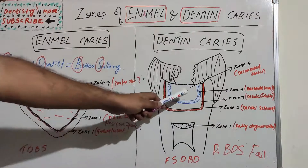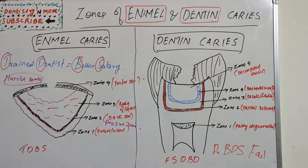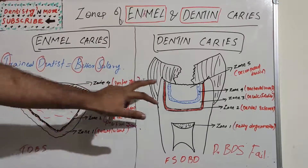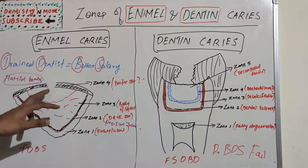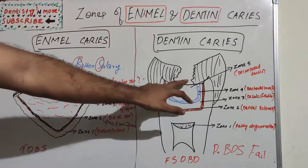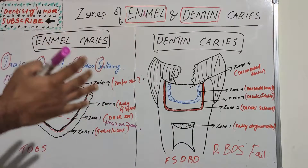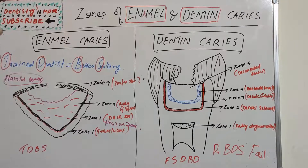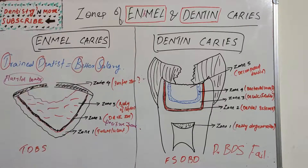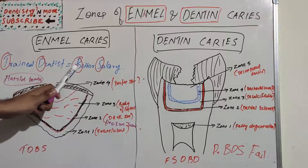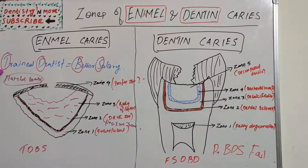In tooth preparation, zones 4 and 5 must be removed; zone 2 is self-repairable. The enamel zones are: Translucent zone, Dark zone, Body of lesion, and Surface zone — from the advancing front to the surface. The mnemonic from advancing front to surface is: 'Trained Dentist Better Salary' — T for Translucent, D for Dark, B for Body of lesion, S for Surface zone.